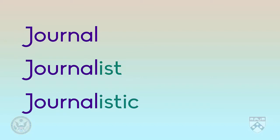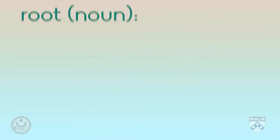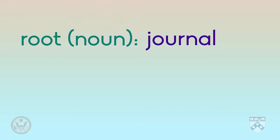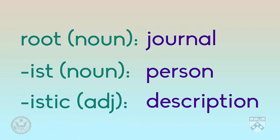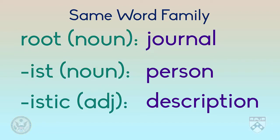The word endings, also called derivational suffixes, change the part of speech — noun, adjective, verb, etc. — while the root of the word, the letters all forms have in common, stays the same. So journal is another word for newspaper. A journalist is a person who produces news. And journalistic is an adjective describing the process of creating a news story. Words with the same root but with different word endings are all part of the same word family.